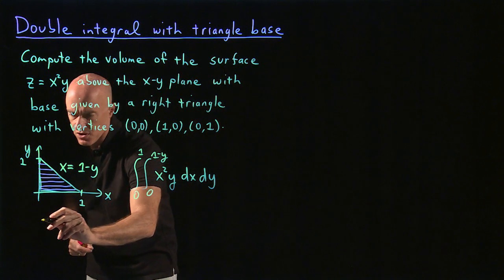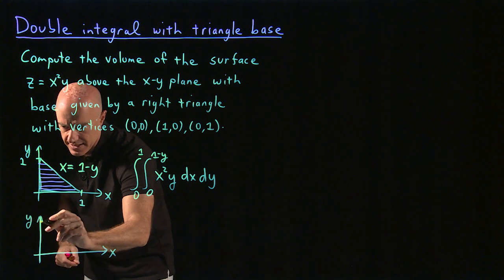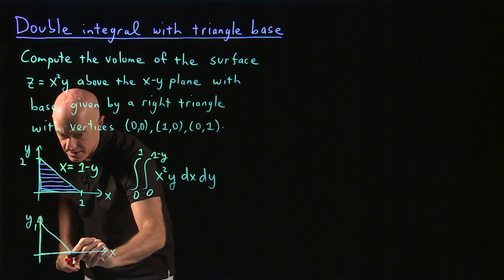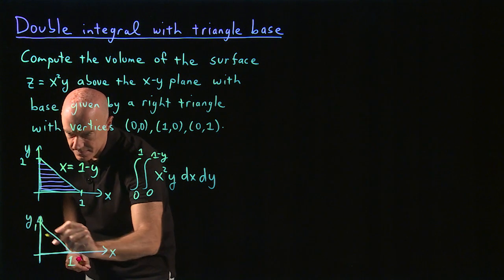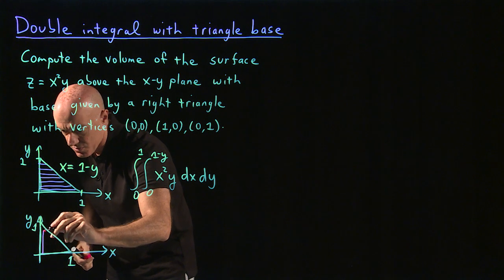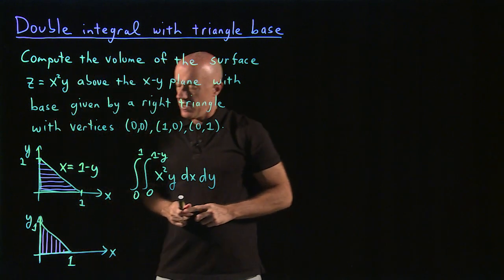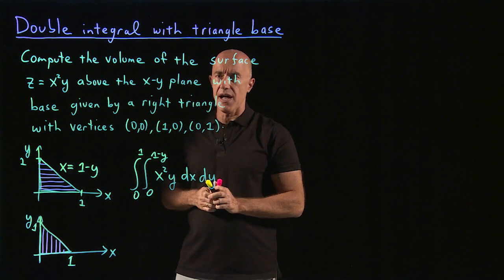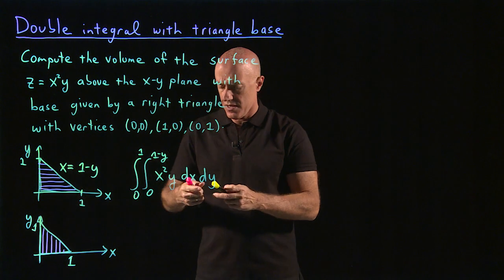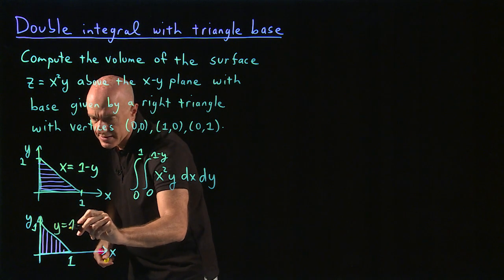We could have integrated along y first, so let me draw the picture for that. So x and y. And again, we have our triangle, right? 1 and 1. Now we're going to integrate along y first, so let me draw the first direction of integration. We need to specify the limit that we integrate along y. So we're integrating from y equals 0 to this value of y. This value of y here is equal to 1 minus x.